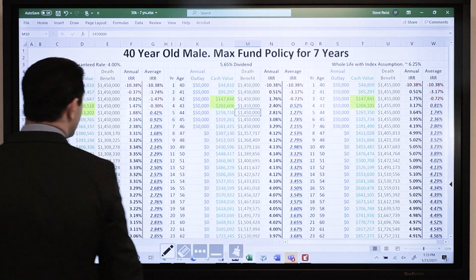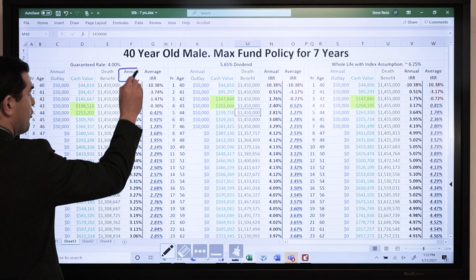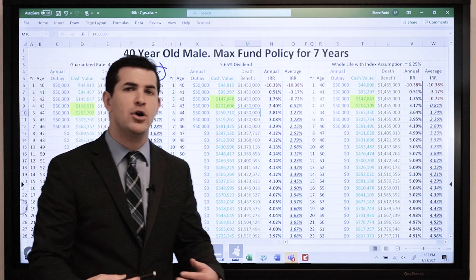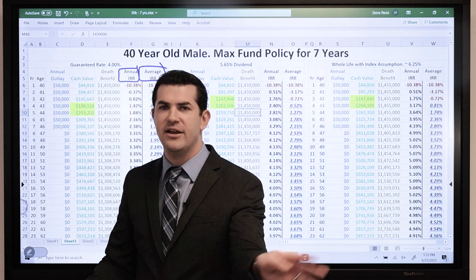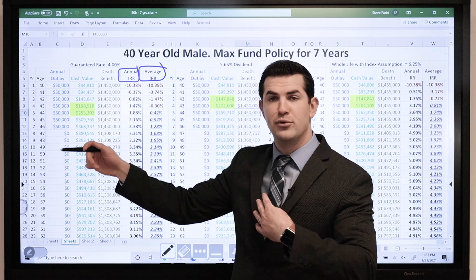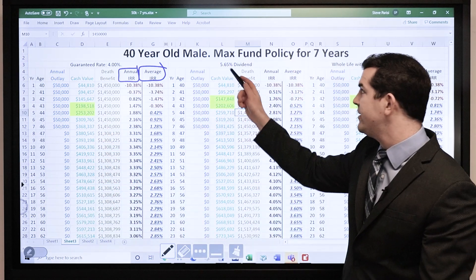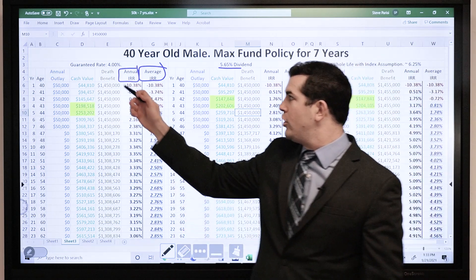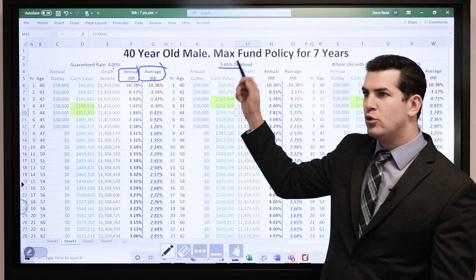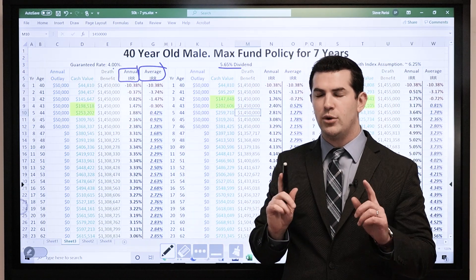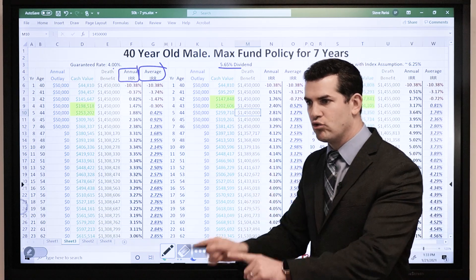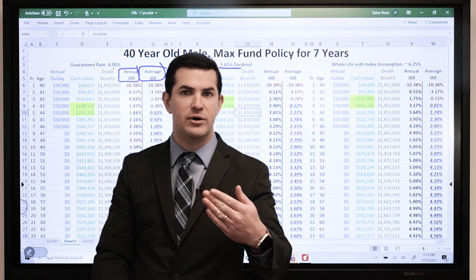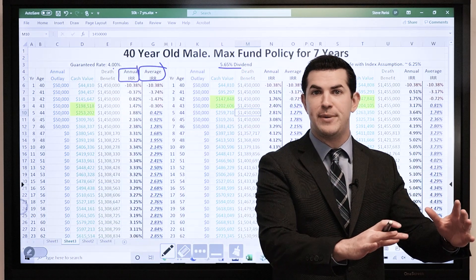Now, the annual internal rate of return is really what we want to look at. What's my net growth over time? Have you ever heard that you've got a guarantee of 4%? Meaning I'm earning 4% on my money? No, not at all. A dividend of 5.65. Is that what you're earning on your money? No, not at all. When you see a guaranteed rate or a dividend rate, always remember this: that is a gross rate credited after the company's insurance expenses, mortality charges, basically the cost of the insurance policy.